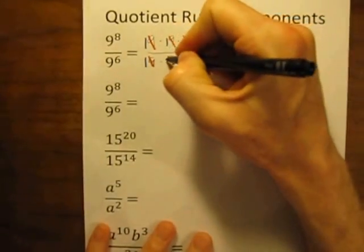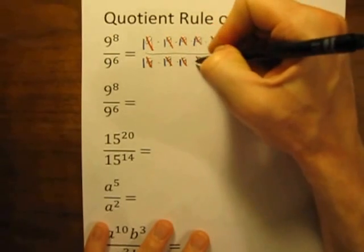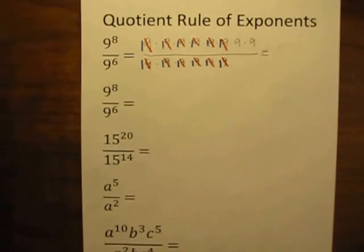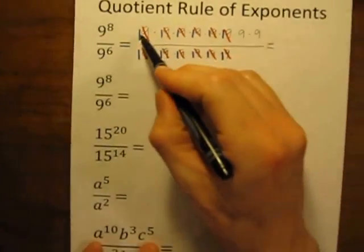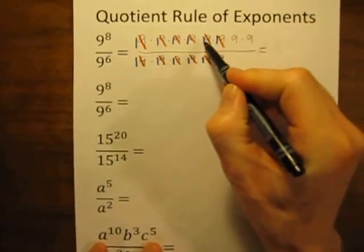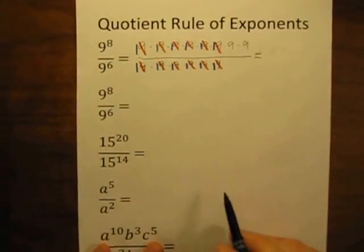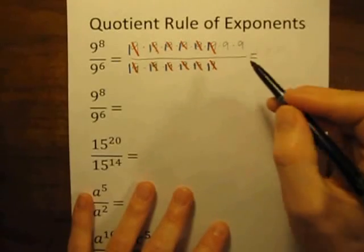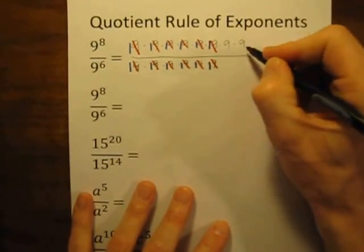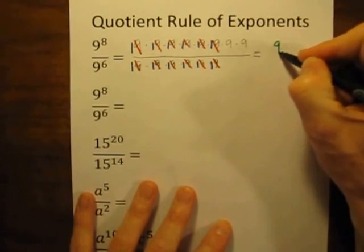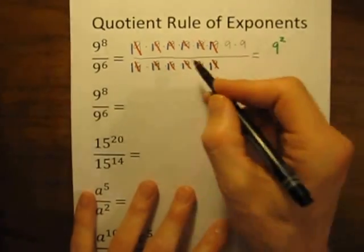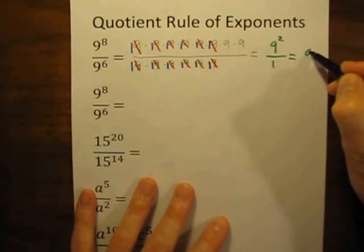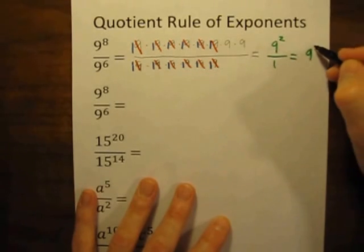Each cancellation becomes 1 over 1. So what's left? Across the top we've got 1 times 1 times 1 times 1 times 1 times 1 times 9 times 9. All of those 1's multiplied together just stay 1, and across the top we have 9 times 9 — two 9's multiplied together — that would be 9 to the 2nd power. Across the bottom, 1 times 1 times 1 times 1 times 1 all stays 1. So this finally reduces to 9 squared divided by 1, which is just simply 9 squared.